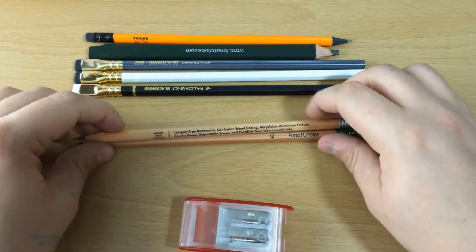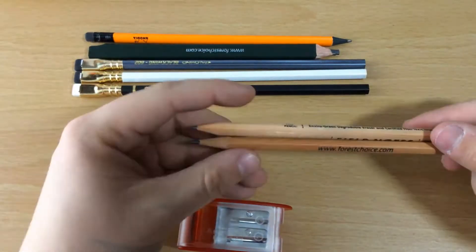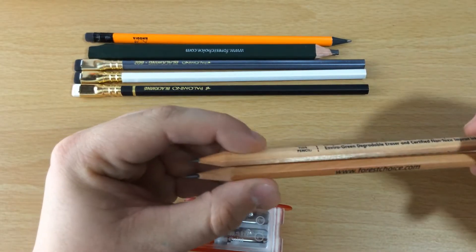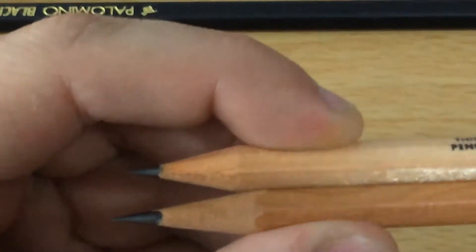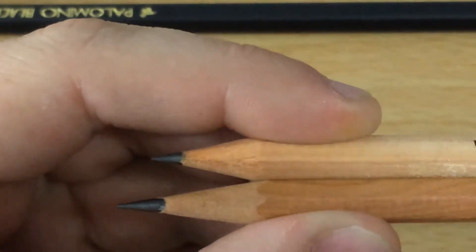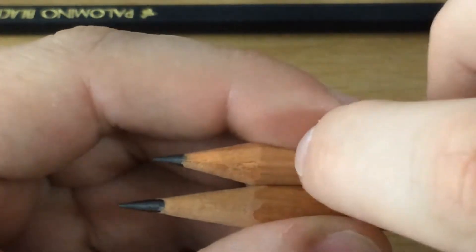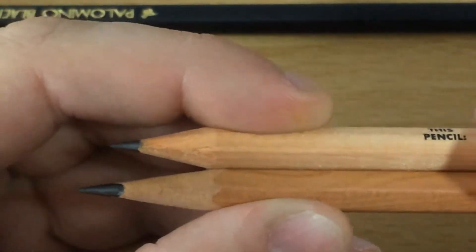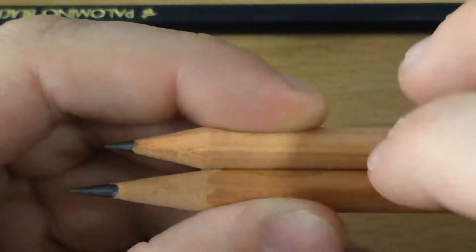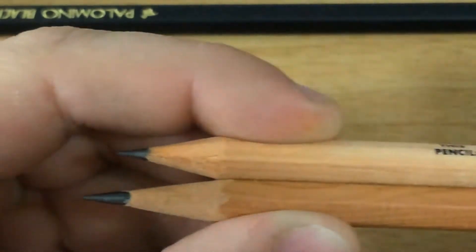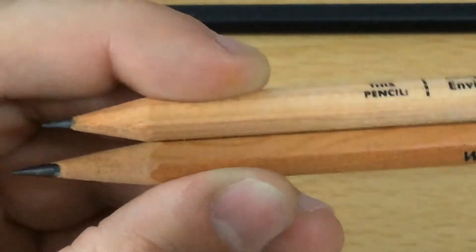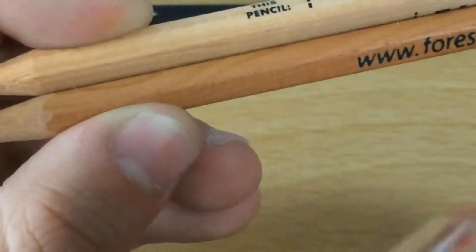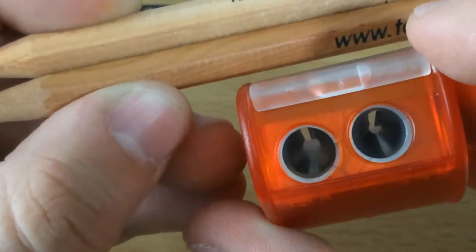Just to see a comparison of how the long point pencil sharpener shapes the pencil compared to a regular one, I have two pencils right here. This one is the Field Notes pencil sharpened with just a regular pencil sharpener I've had for a while. And this is the long point one. You can tell the point is definitely longer. And the only way to do that is with this two-step process right here.